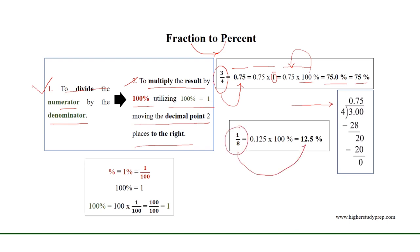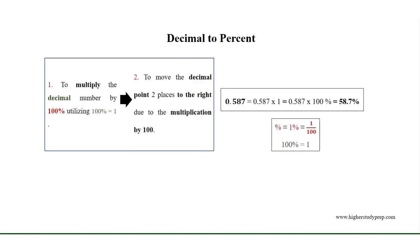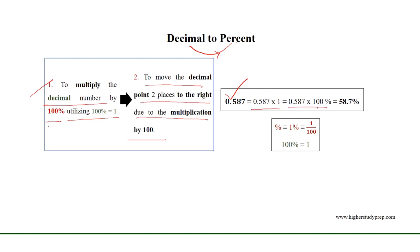Similarly, 1 over 8 equals 12.5%. To obtain percent from a decimal, we multiply the decimal number by 100% — since 100% equals 1 — and move the decimal point two places to the right. For example, the decimal number 0.587 equals 0.587 times 100%, and 0.587 times 100 equals 58.7, where the decimal point is moved two places to the right due to multiplication by 100.